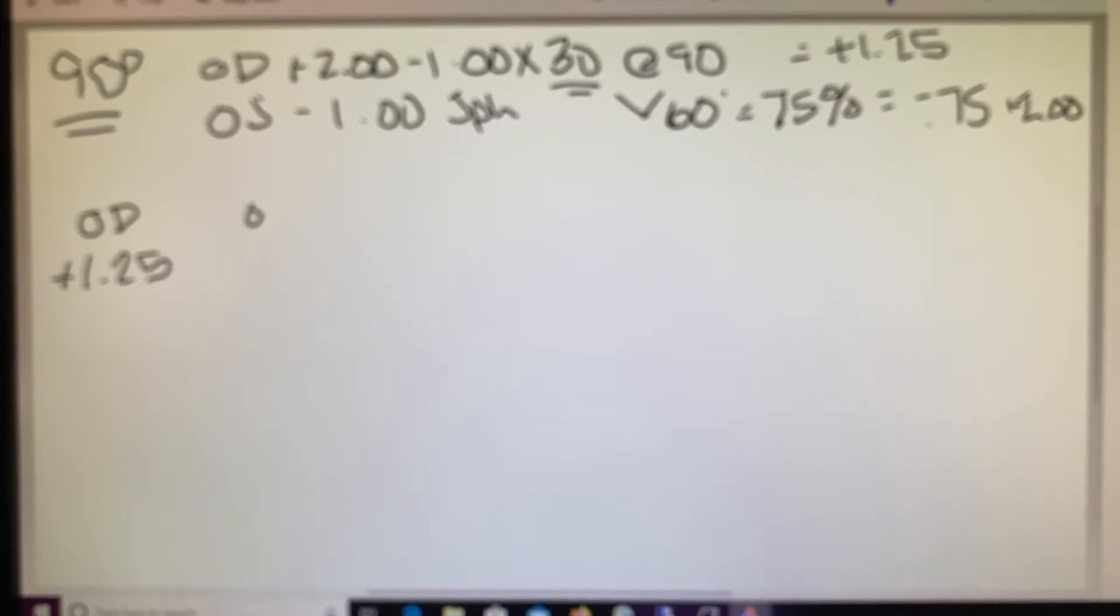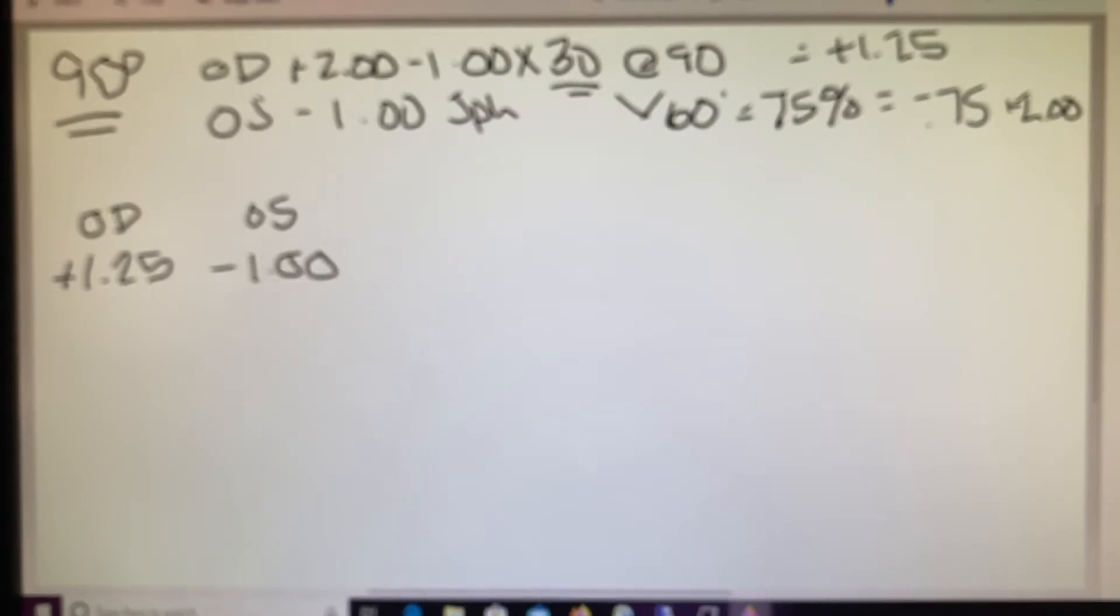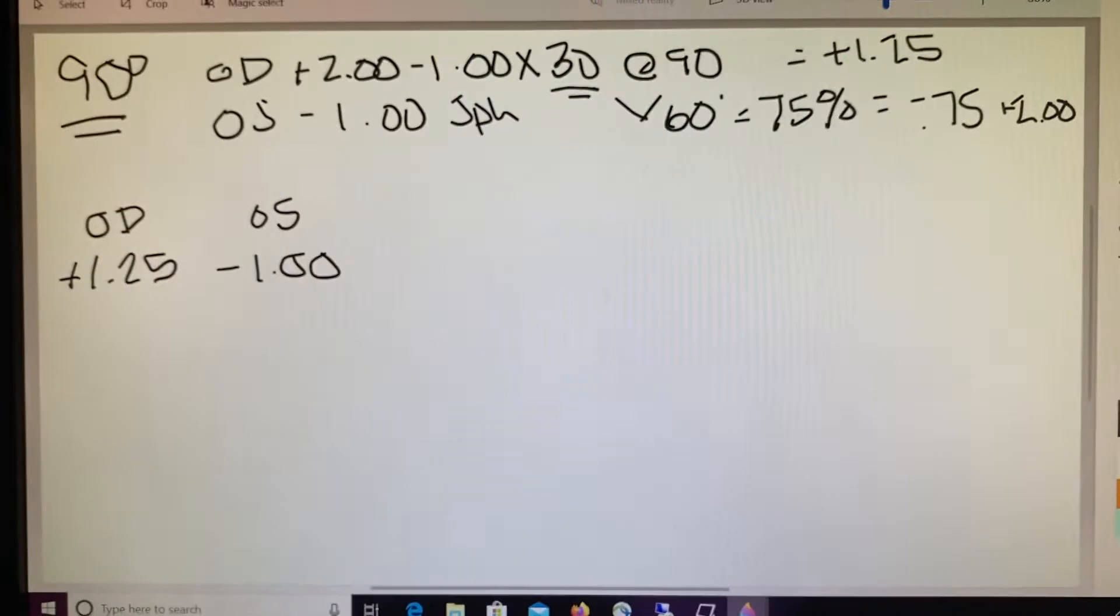Now on the left eye, they were really nice, and they gave us a spherical lens, which means that at every single meridian, 1, 2, 3, 45, even at 90, this lens is a minus one. So in a spherical lens, it doesn't matter what meridian we're talking about, that is the power.